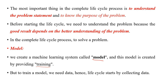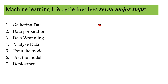In the machine learning life cycle, there are a total of seven steps: gathering the data set, data preparation, data wrangling, analyze the data, train the model, test the model, and deployment. We are going to discuss these seven steps of the machine learning process.